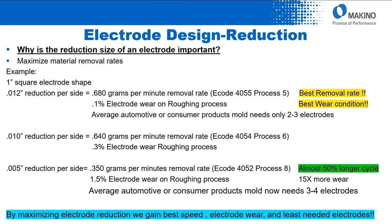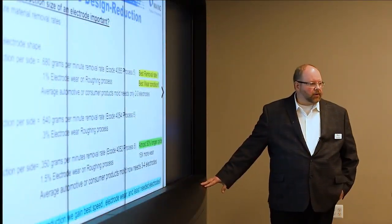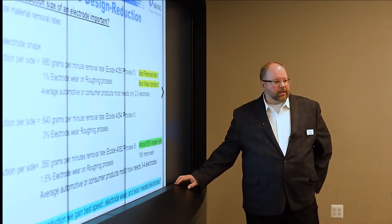To reiterate: using ECO 4055 in process 5 at 12 thou reduction gives 680 grams per minute removal rate and 0.1% wear — the best removal and wear condition for a 1-inch electrode. Dropping from 12 to 10 thou reduces removal to 640 and increases wear from 0.1% to 0.3%. Using the old 5 thou reduction drops to 350 grams per minute and 1.5% electrode wear — 50% longer cycle time, 15 times more wear, and potentially jumping from two electrodes to three or four.